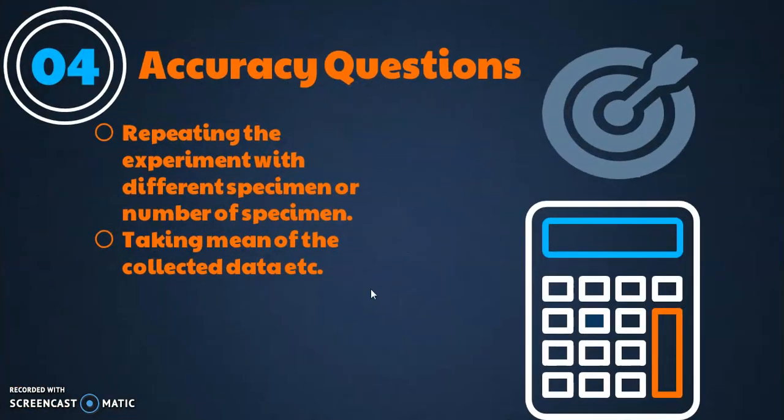In the end, they sometimes give you one experiment that has been performed and ask you how you can improve the reliability of the experiments. This is one common question. Repeating the experiment with different specimens or number of specimens, or you can say increasing the sample size, and then taking mean of the collected data, which means taking average of the numbers, to make it more accurate and reliable.